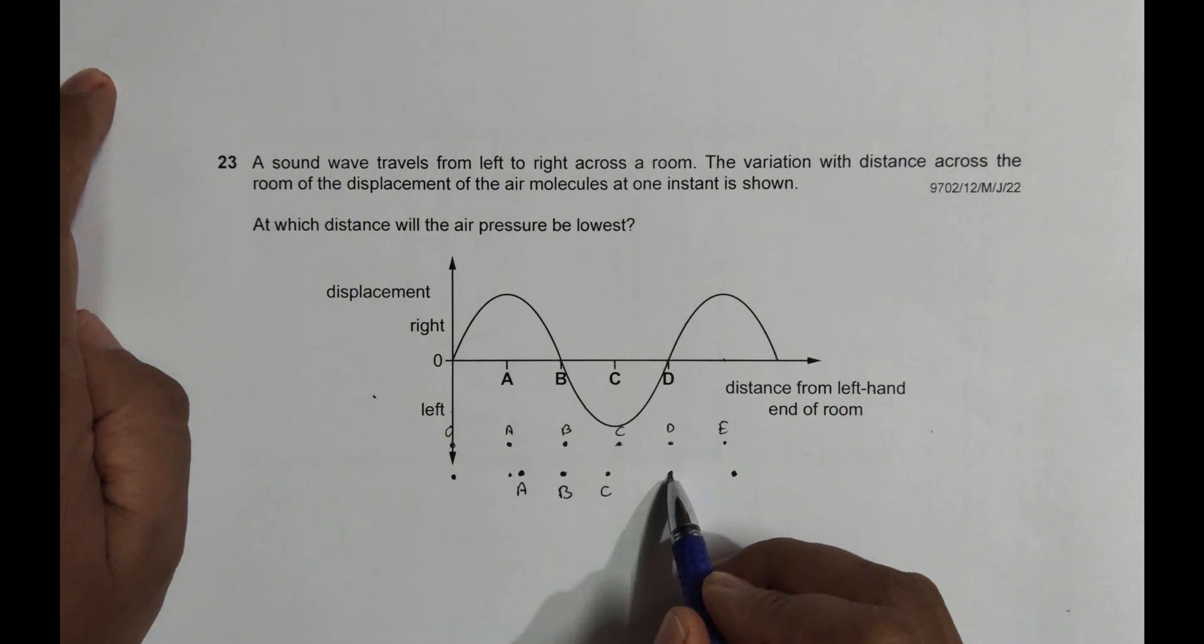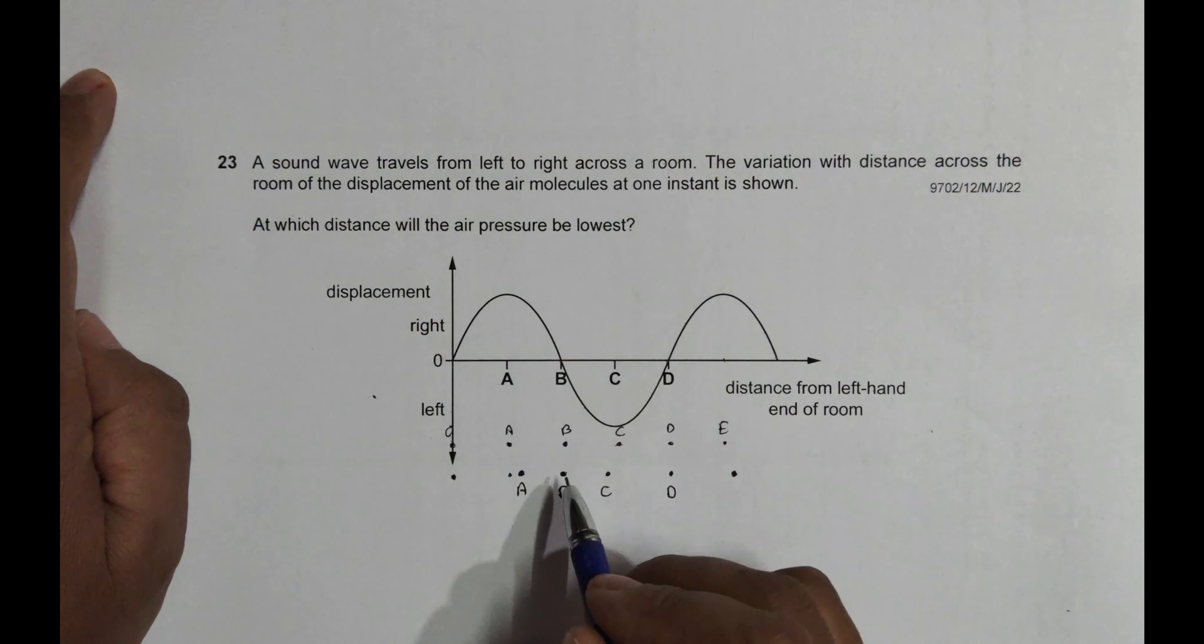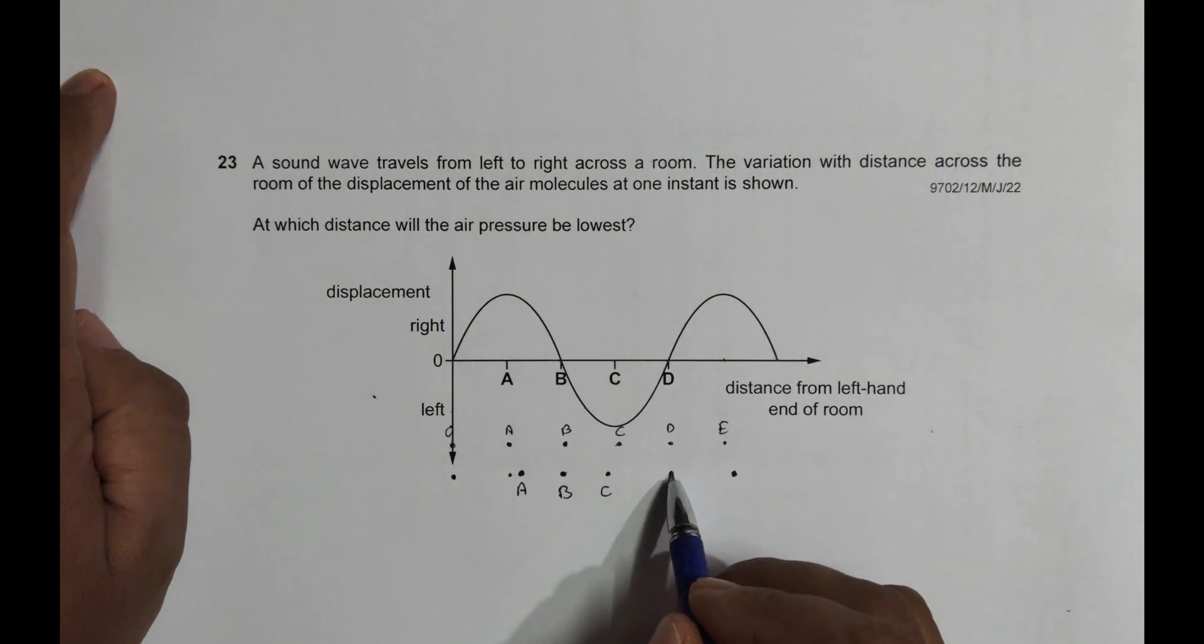So that's why the air pressure here should be the lowest. Lowest air pressure, highest air pressure, middle level air pressure, middle level air pressure, but here is the highest pressure and lowest pressure here.